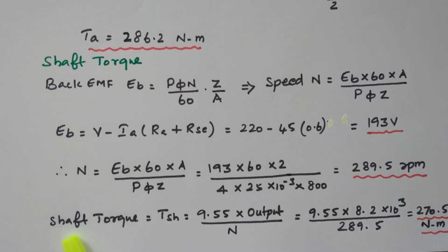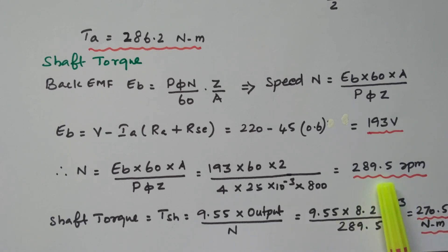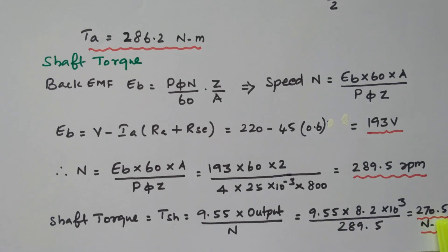Using this speed, we can find the shaft torque. The formula for shaft torque is 9.55 into output power divided by speed. The output power is already given as 8.2 kilowatt, which is 8.2 into 10 to the power 3 watts, and the speed we calculated is 289.5 RPM. So shaft torque equals 9.55 into 8.2 into 10 to the power 3 divided by 289.5, giving 270.5 Newton meter.